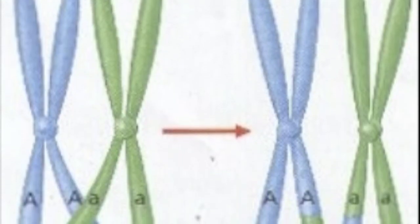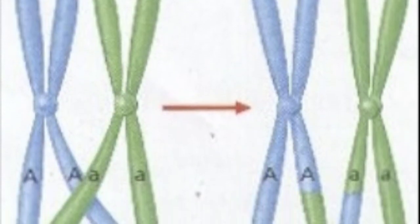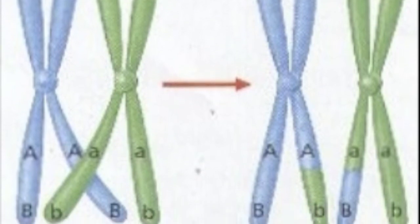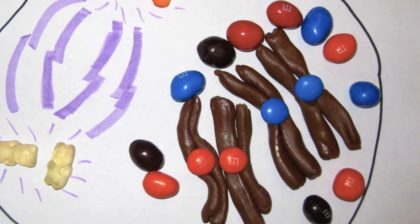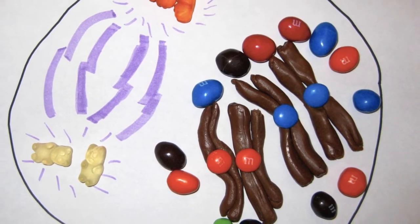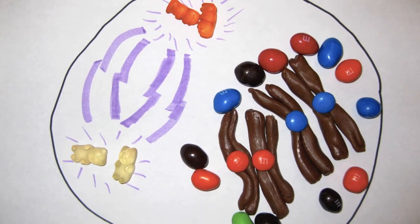Crossing over occurs at the chiasmata, and segments of DNA are switched between non-sister chromatids. Centrosomes have also started to drift to opposite poles, extending the microtubules, and the nuclear envelope breaks down.